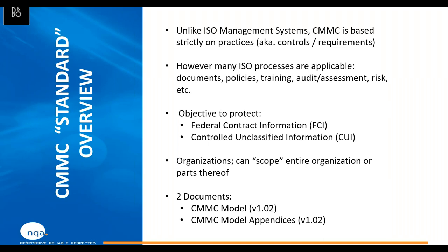Similar to ISO, organizations can scope either the entire organization or parts thereof. The warning would be: if you scope too narrowly, that certification may or may not work for future RFPs. The quote-unquote standard is really made up of two documents. The primary document is what they call the model — technically today at version 1.02 — which would be synonymous with something like ISO 9001, where the practices or controls are stated. The model is certainly something you want to get your hands on.